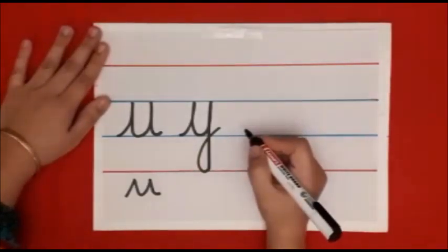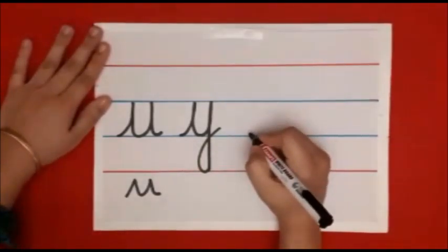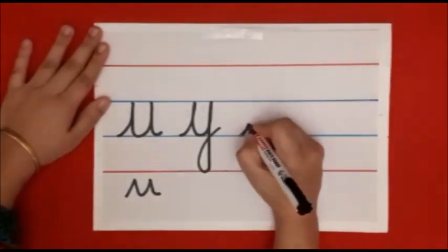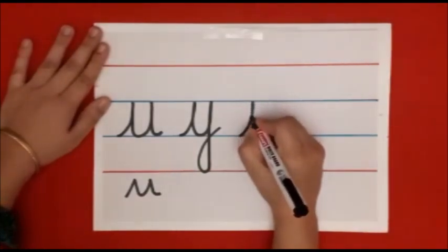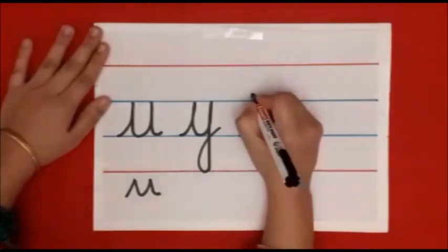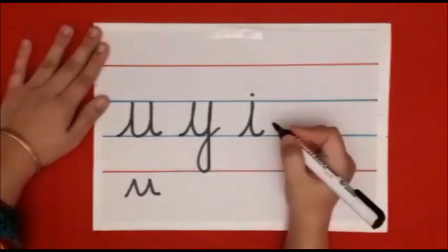Okay, now we will make letter I. Easy peasy. Go up, come back, small tail and put a dot. This is letter I.